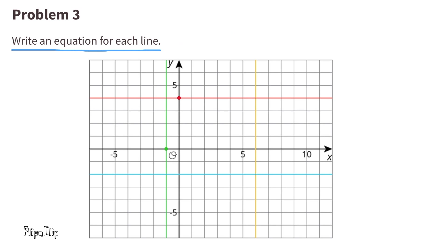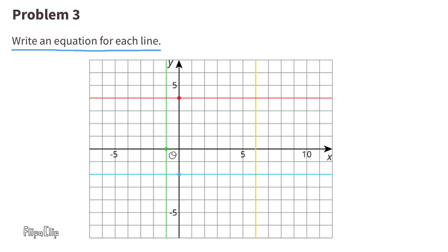Look at the vertical green line — it runs through the x-axis at negative 1, so x equals negative 1. Because no matter where you are on this green line, the x value will always be negative 1. The horizontal blue line has a y-intercept of negative 2, so no matter where you are on the blue line, the y value will always be negative 2: y equals negative 2.